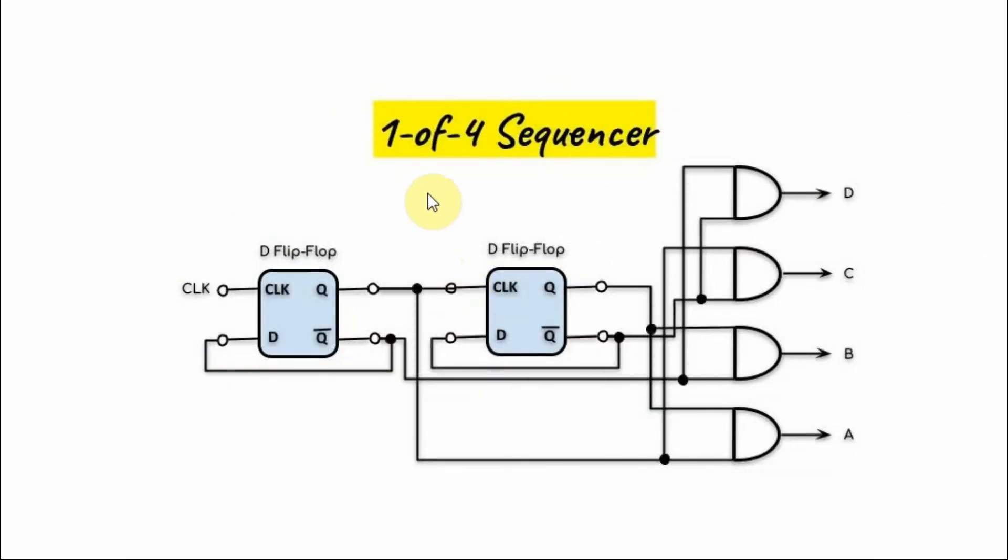This is the block diagram of the one-of-four sequencer where we can have at the output the count sequence one, two, four, eight.